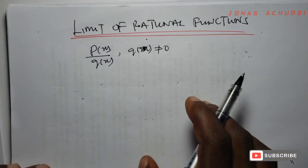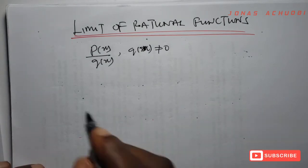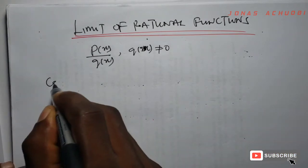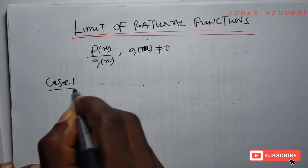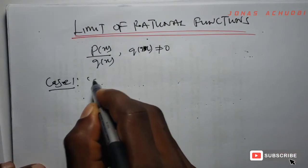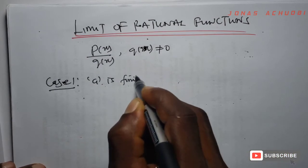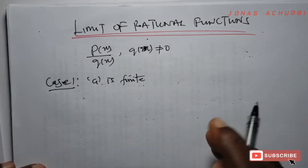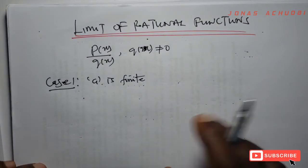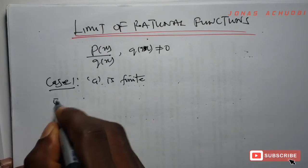We categorize limits of rational functions into two cases. Case 1 is where the value a is finite — where x tends to a and the value a is finite. For example: